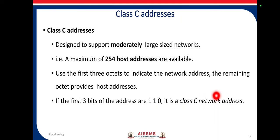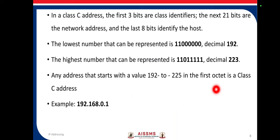The first three bits of a class C address are 1, 1, 0. These first three bits are the class identifier, the next 21 bits are the network address, and the last bits identify the host. The lowest number for class C is decimal 192 and the highest is decimal 223.